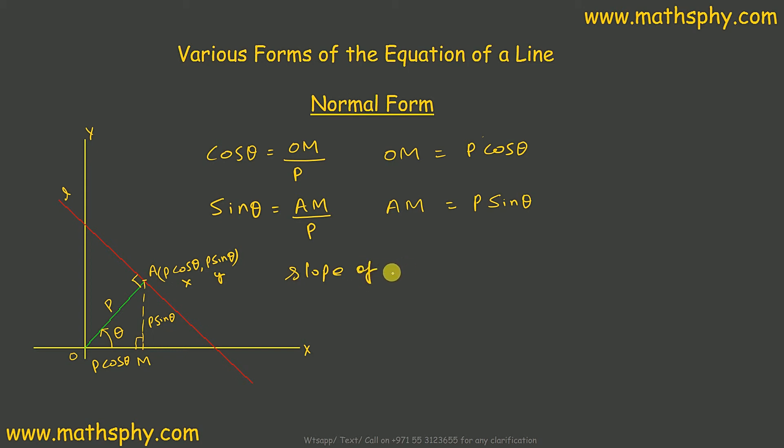if I write slope of L, this line, into slope of OA will be equal to negative 1. Or, if I write slope of L will be equal to 1 over slope of OA, negative. Slope of OA would be tan theta. I will write 1 over tan theta, which is negative cos theta over sin theta.